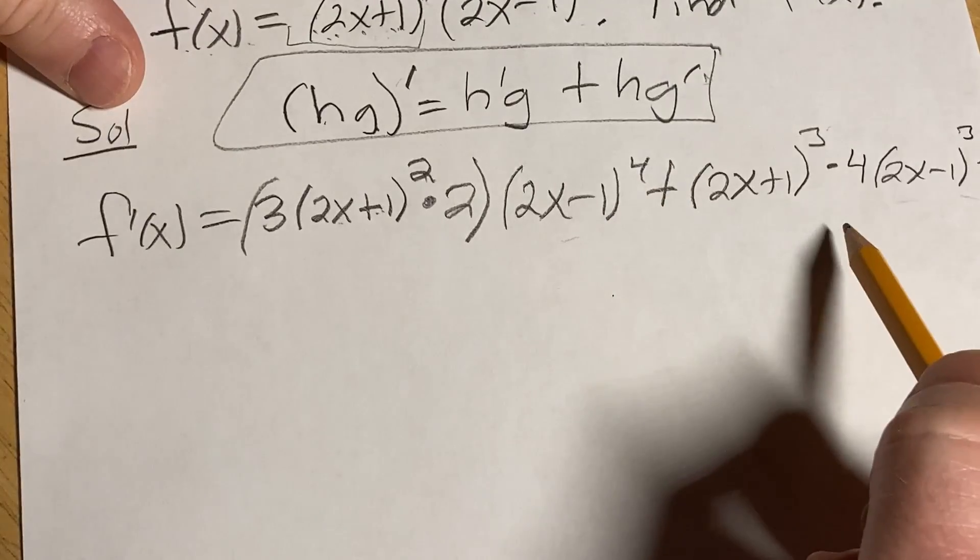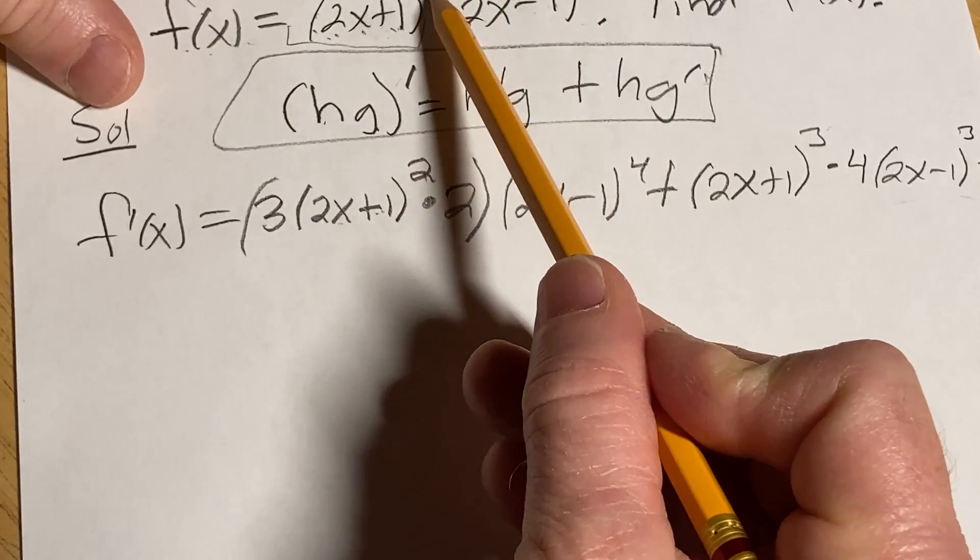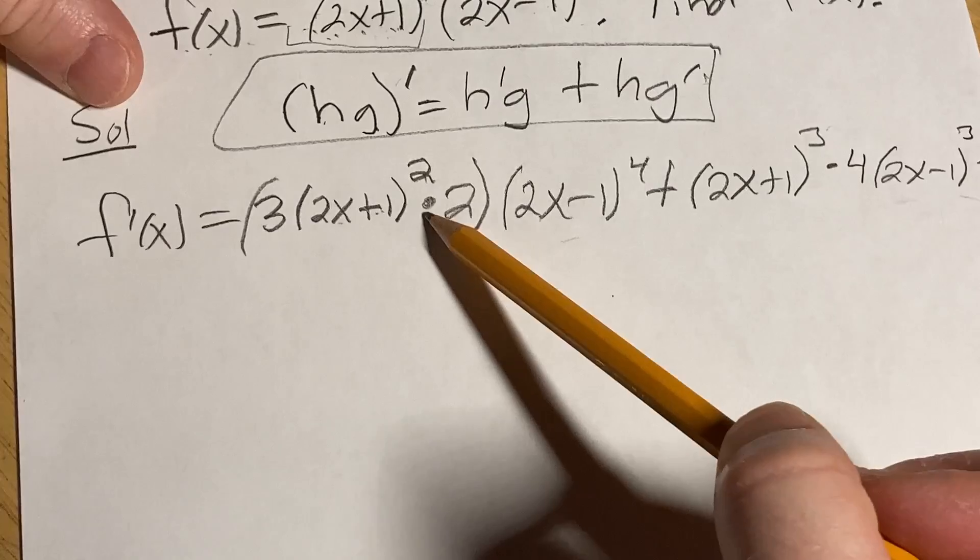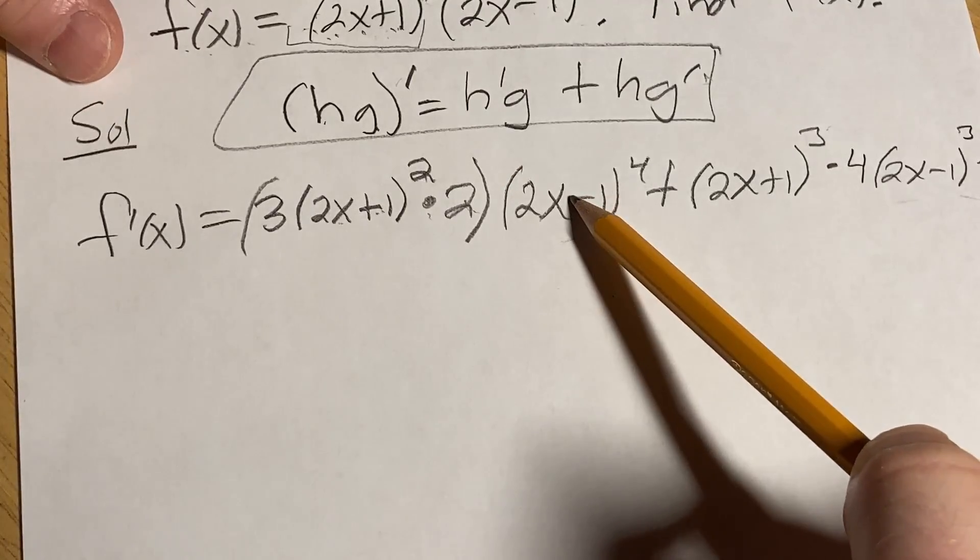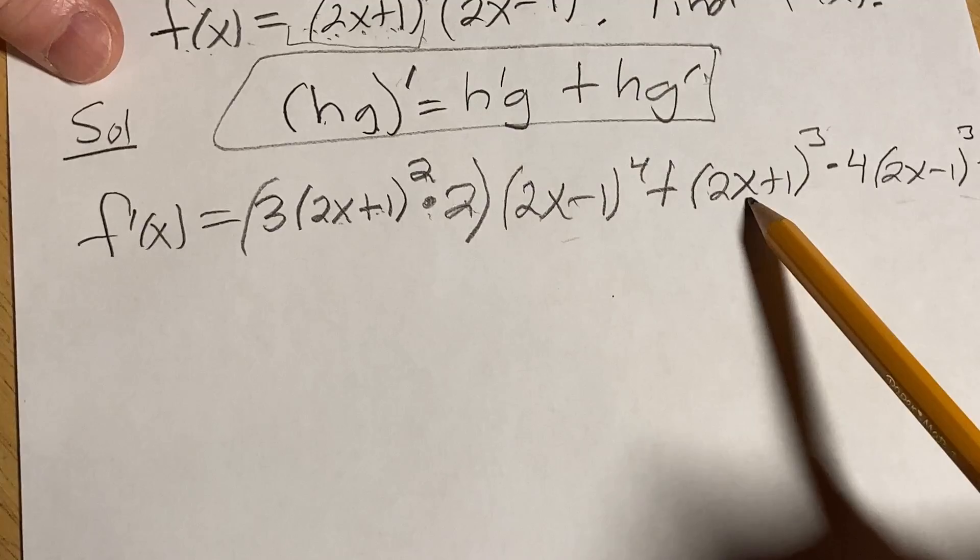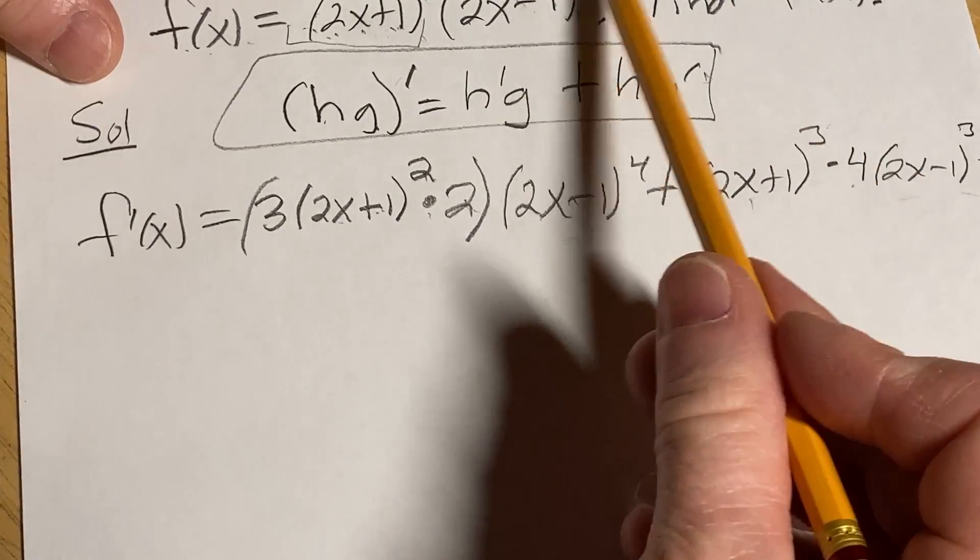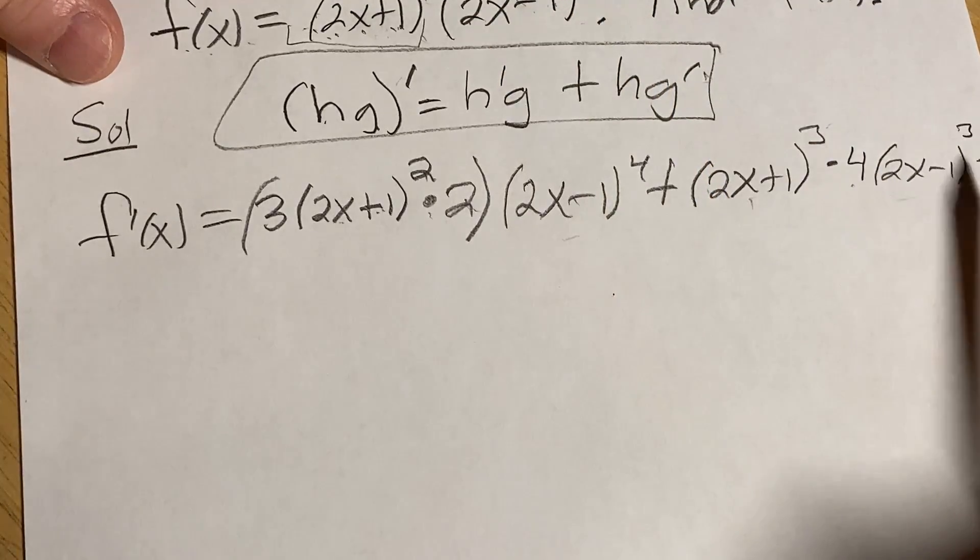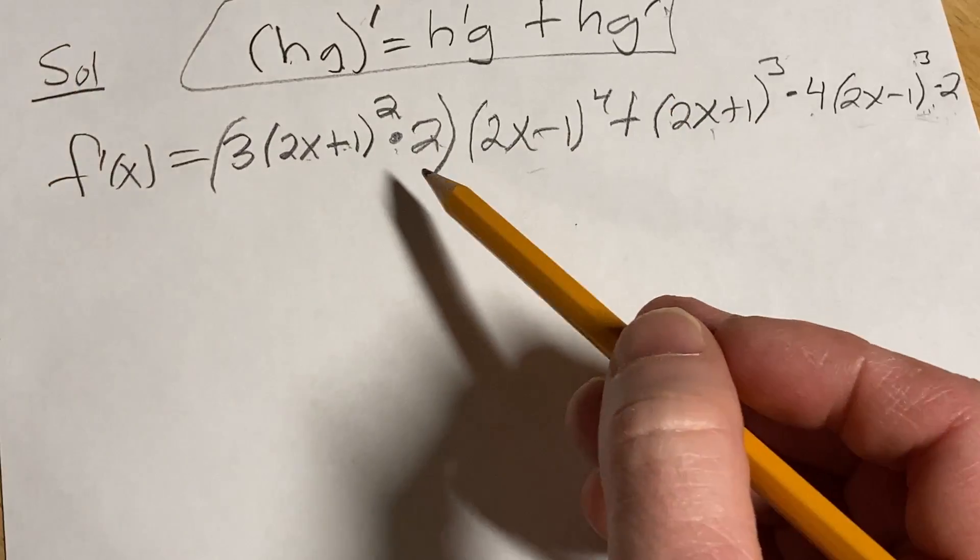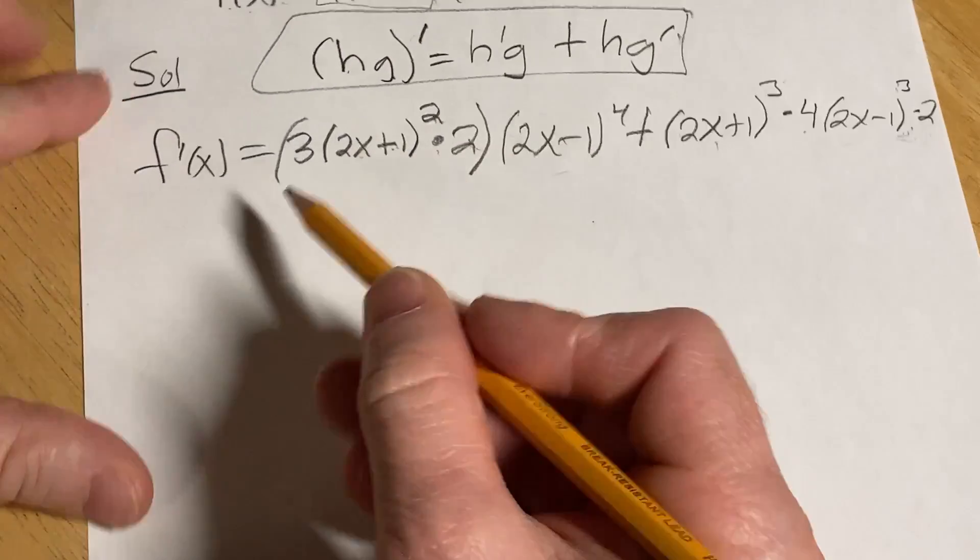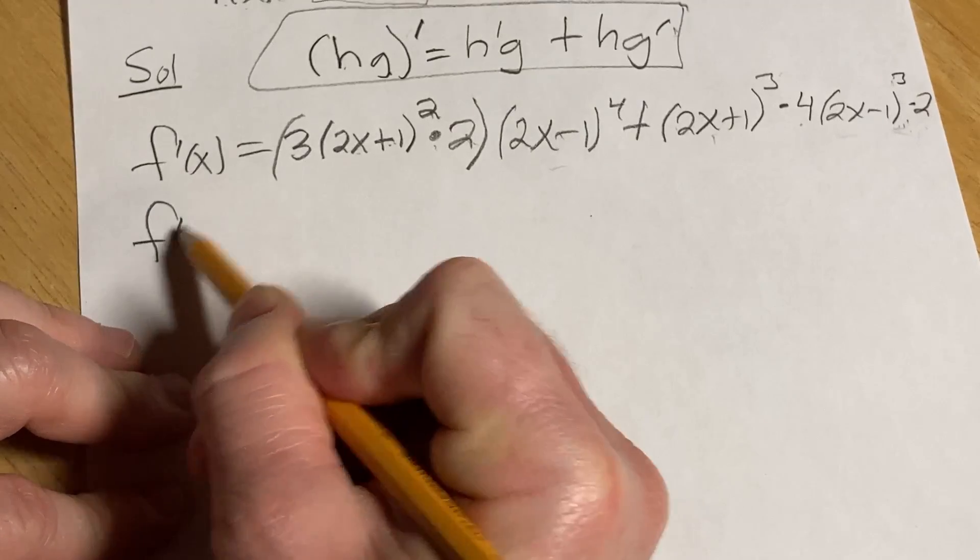Before we do any factoring, let's just check our work. We took the derivative of the first, brought down the 3, left the inside untouched, times the derivative of the inside. Times the second, plus the first, times the derivative of the second. So bring down the 4, inside untouched, subtract 1, times the derivative of the inside, which is 2. That little 2 there. All right, so let's go ahead and clean this up just a little bit before we do any factoring.